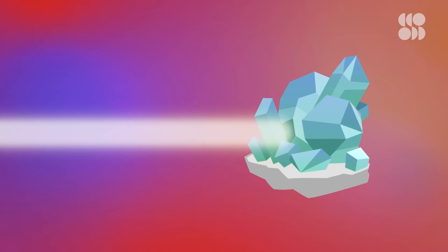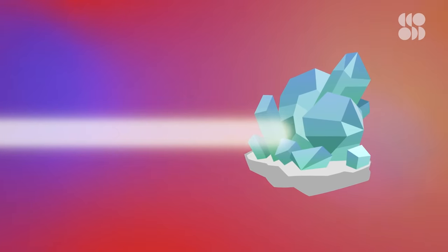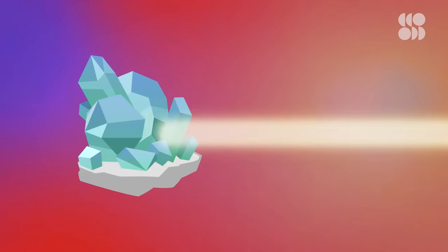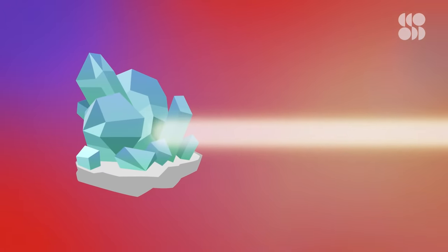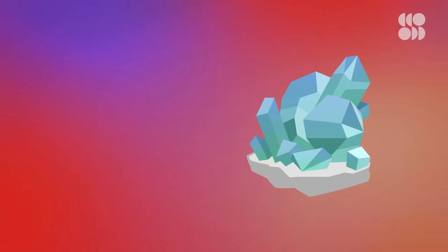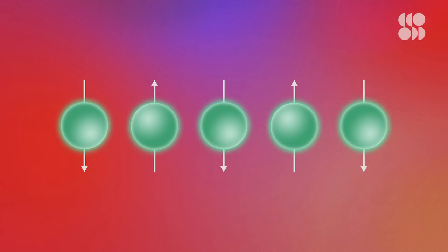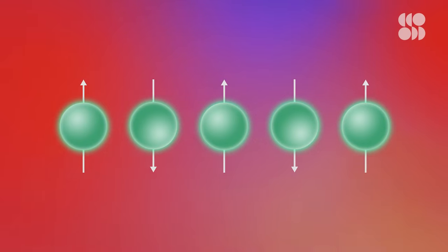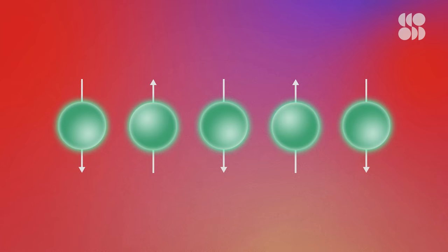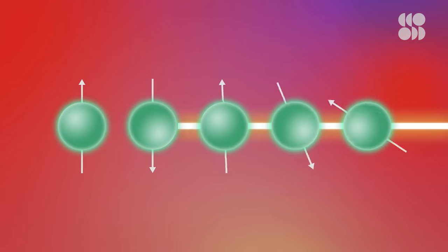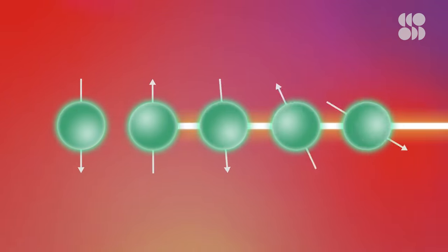A so-called floquet time crystal would flip back and forth like a Wilczekian one, but only if it's being driven by an external source. Physicists have simulated floquet time crystals in computers, imagining a row of particles with spins that flip up and down periodically when hit with a laser beam. This time crystal needs the laser's cycling light waves to flip, but it wouldn't absorb any net energy from the laser to do so.